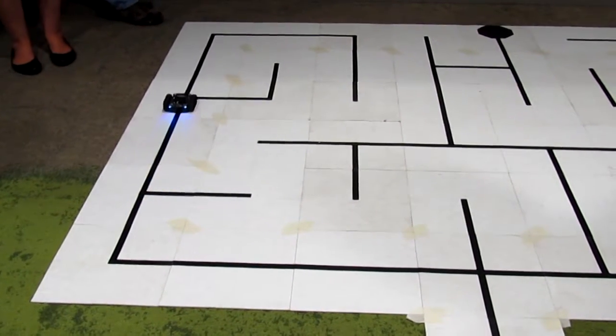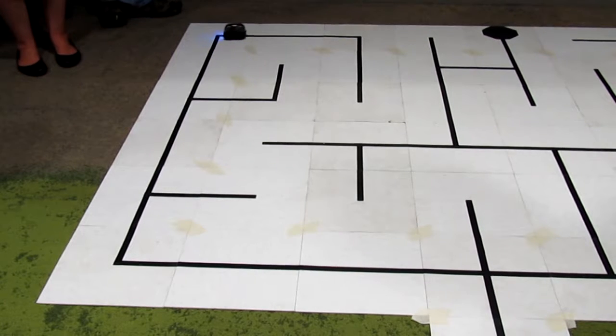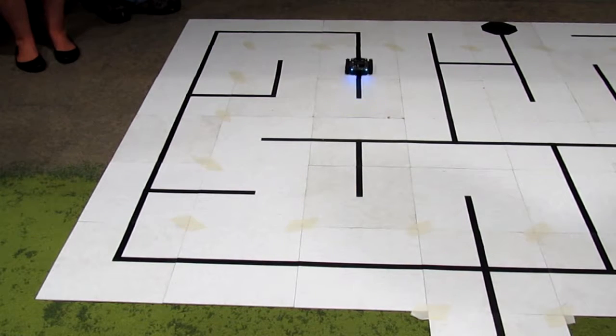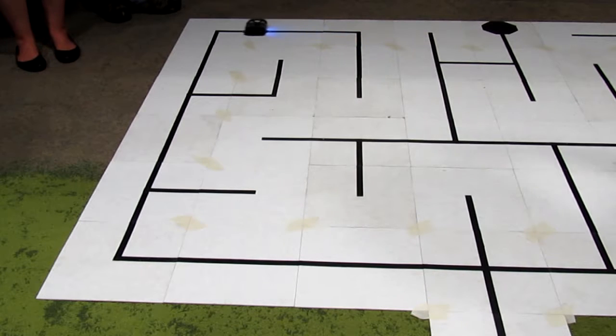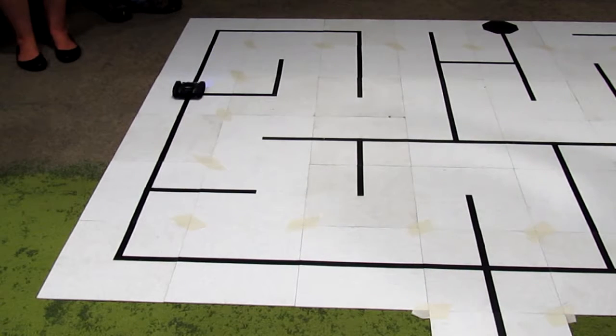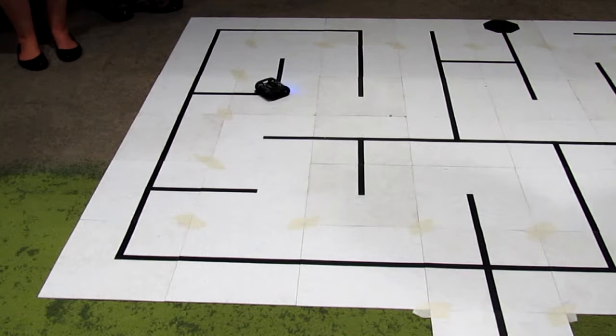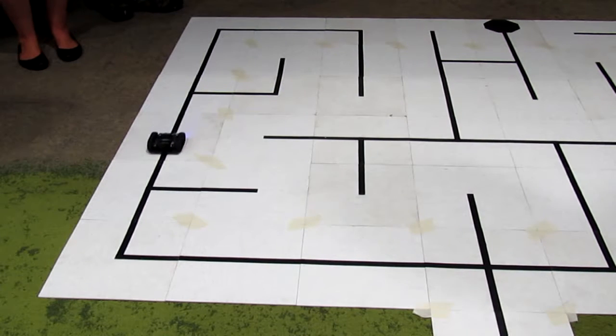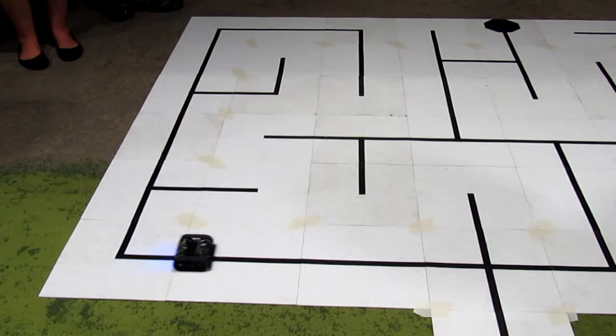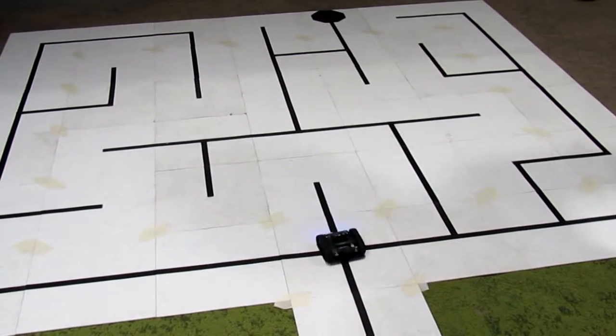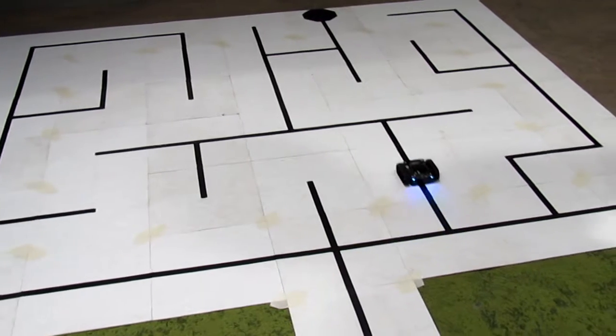So one thing is, it's not doing a left-handed rule. When it comes to an intersection with more than one choice, it remembers which path it took and picks a random direction, then remembers which path it didn't explore. Oh nice, it didn't go down that way.